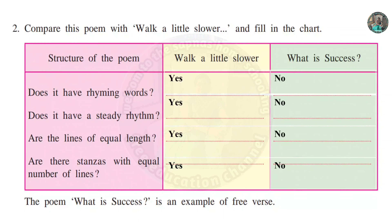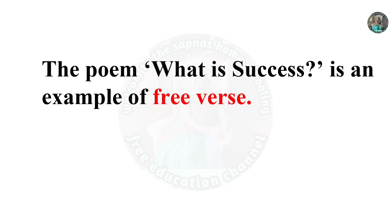Does it have a steady rhythm? For 'Walk a Little Slower' yes, but 'What is Success' - no. Are the lines of equal length for 'Walk a Little Slower' and 'What is Success'? Are there stanzas with an equal number of lines? The poem 'What is Success' is an example of free verse.